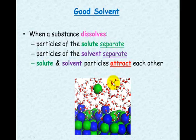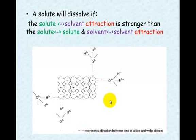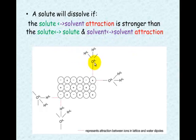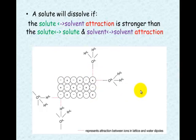First, the water molecules need to separate from each other, and then — if they're attracted — they can pull away the solute particles. But they must be attracted to the solute. A solute will dissolve if the solute-to-solvent attractions, for instance between salt and water, are stronger than the salt-to-salt attraction or the water-to-water attraction. Water can pull apart an ionic lattice only when that attraction is greater.